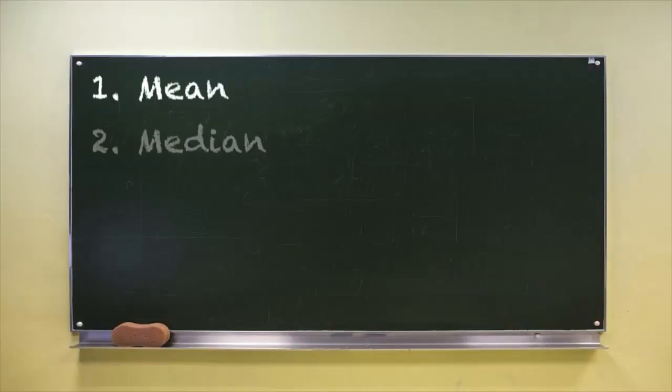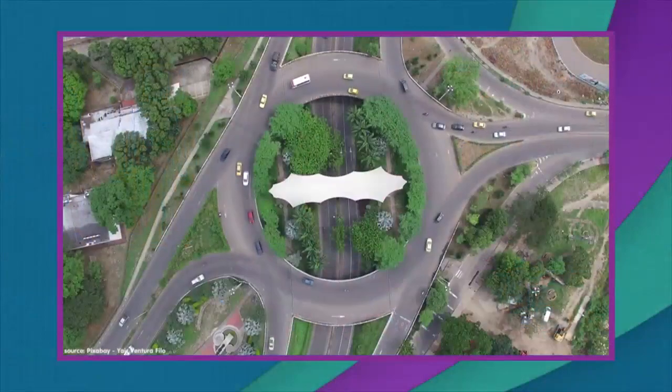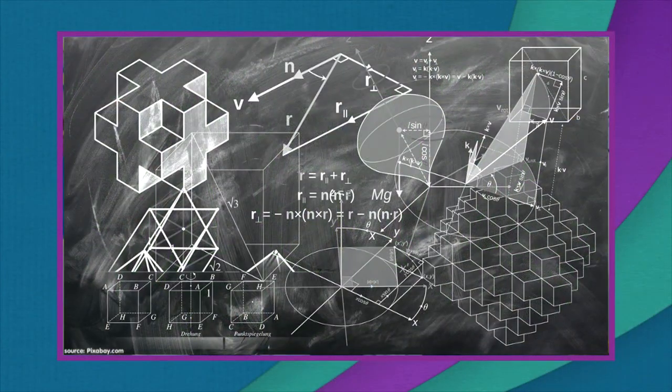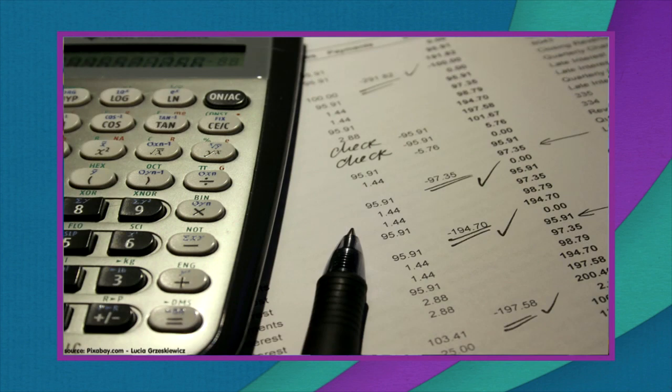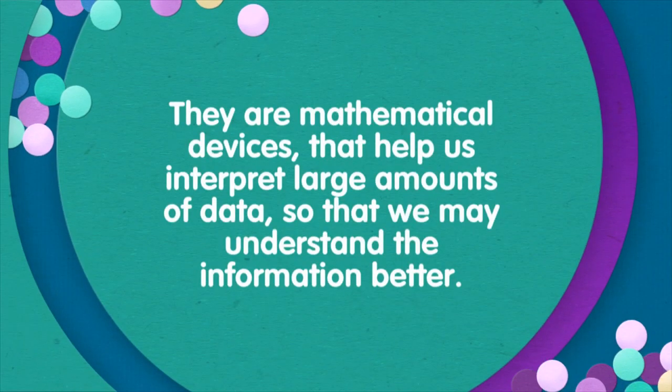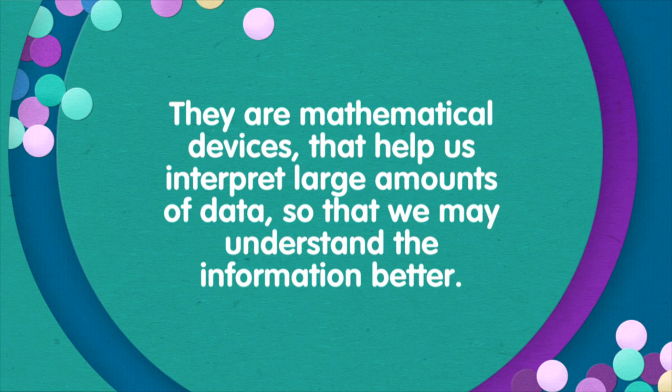We are going to learn about four important concepts: mean, median, mode and range. Now in maths we will often ask you to handle data. This could be the results of a scientific experiment, measurements or even a survey. Often the information we collect can be very large. For example, you could be conducting a traffic survey on a busy road and there may be a lot of numbers to look at, and it would be pretty hard to make sense of it. So that's where mean, median, mode and range come in — they are mathematical devices that help us interpret large amounts of data so that we can understand the information better.